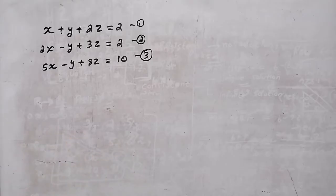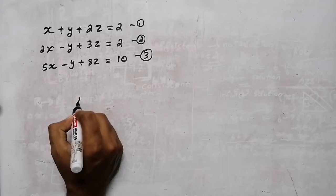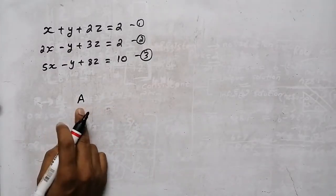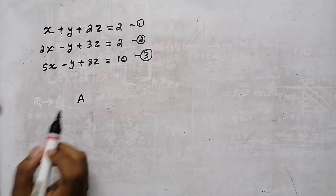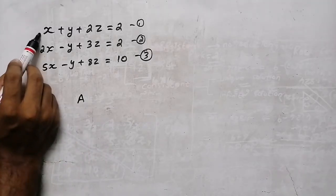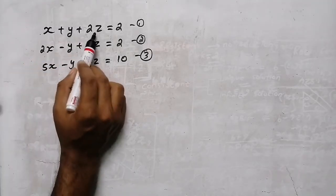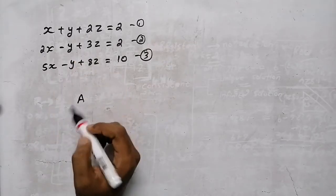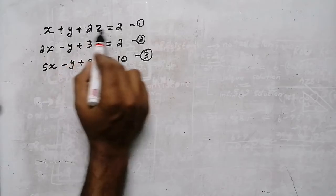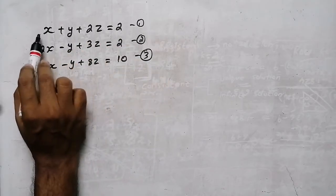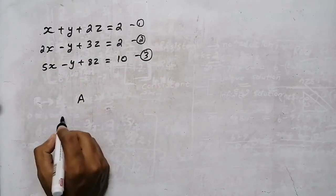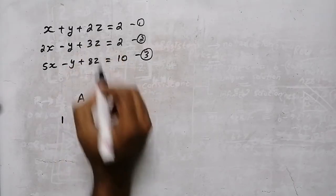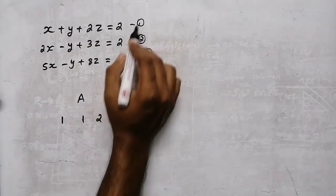We are going to look at equation number one and write a matrix of coefficients. The coefficient from the first equation is 2.